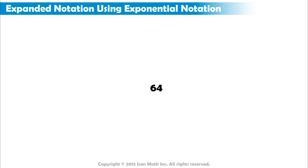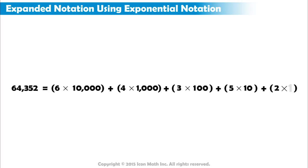For example, 64,352 in expanded form equals 6 times 10,000 plus 4 times 1,000 plus 3 times 100 plus 5 times 10 plus 2 times 1.